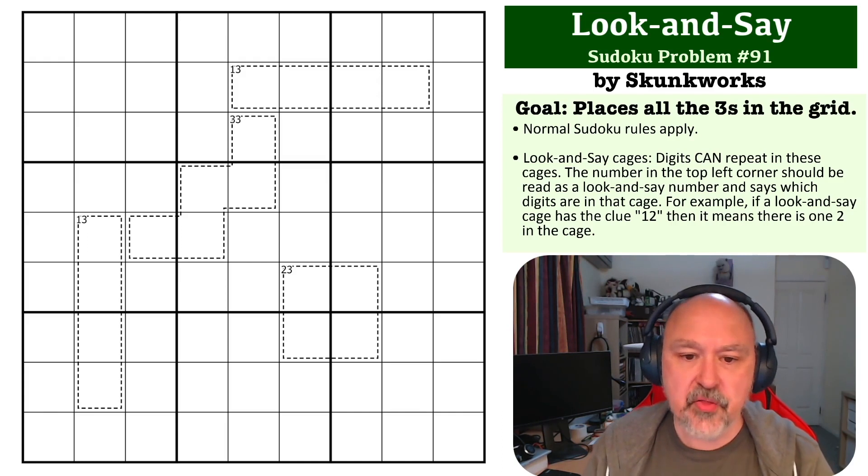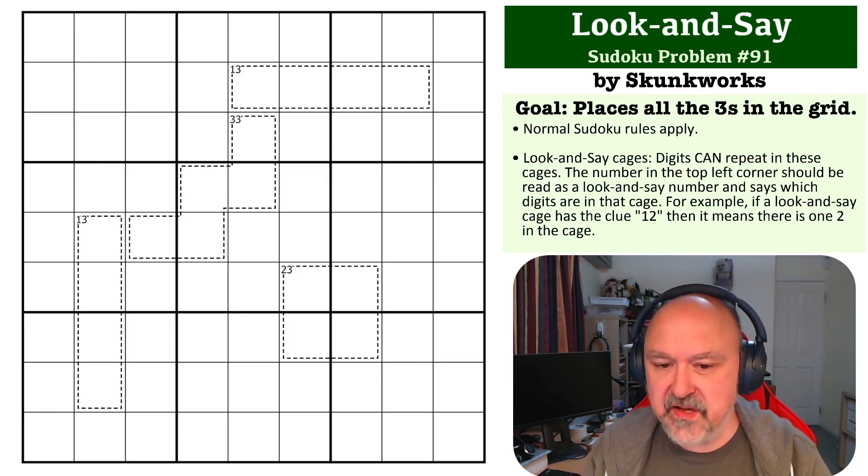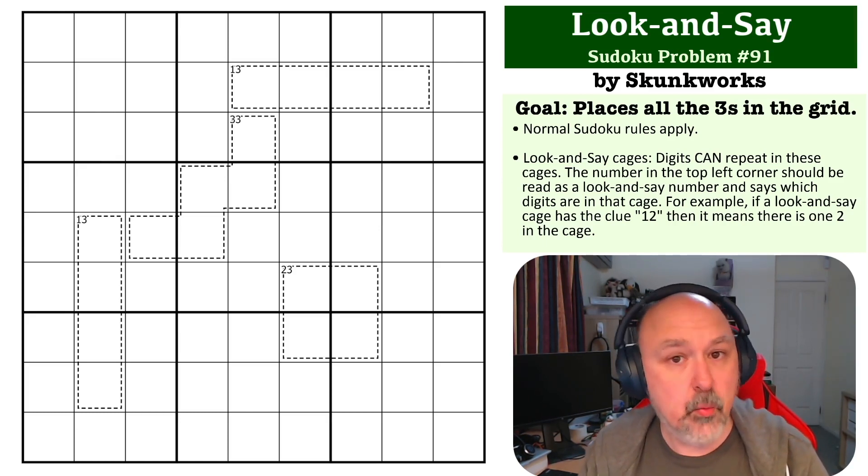The way look-and-say works is the cages that you see are not normal killer cages. The way the clues need to be read is as two digits. So, for example, the 1-3 means that the cage must contain one 3.